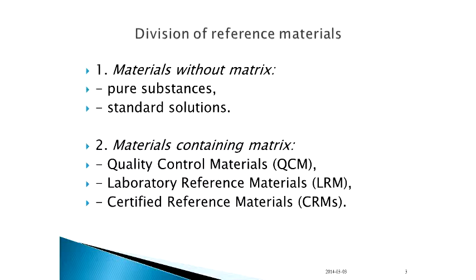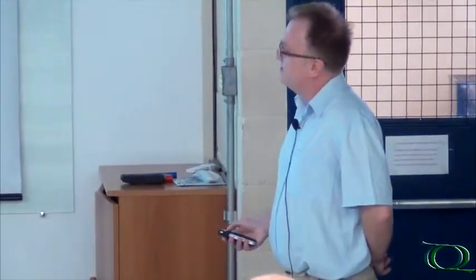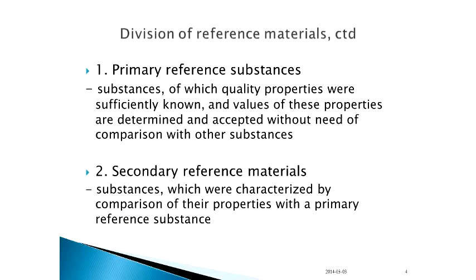How can we divide our reference materials? First, there are materials without matrix, which include pure substances as well as standard solutions. The second group can be defined as reference materials containing matrix, such as quality control materials, laboratory reference materials, and certified reference materials. The main difference between them is the presence or lack of a matrix. The first category is used mainly for calibration purposes, and the second category is mainly used in validation processes.